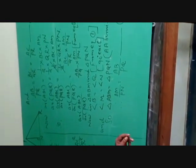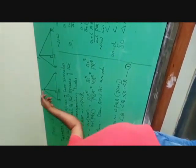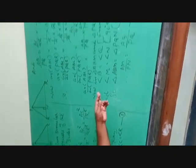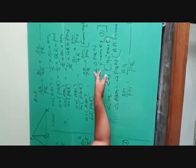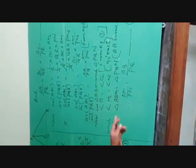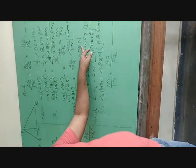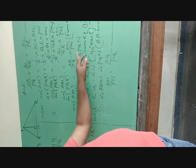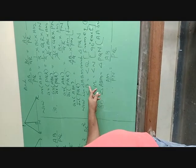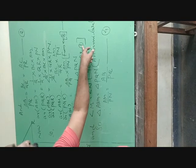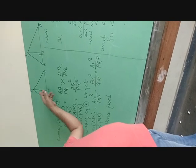Now, we consider the two smaller triangles: triangle ABM and triangle PQN. From equation number 1, there is already mentioned angle B is equal to angle Q.